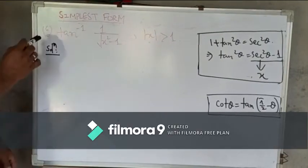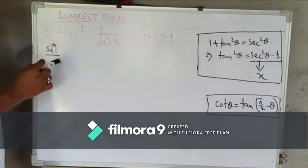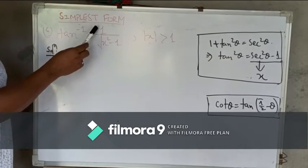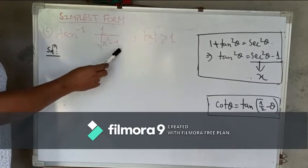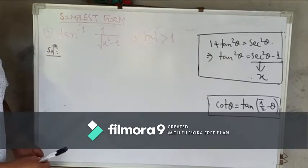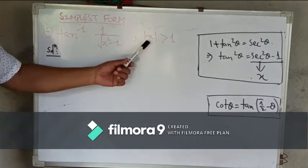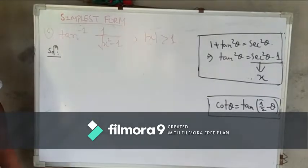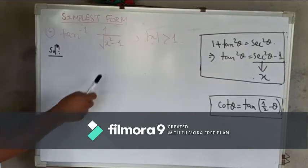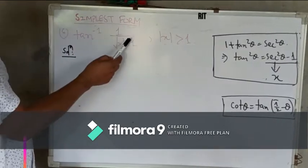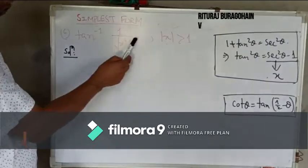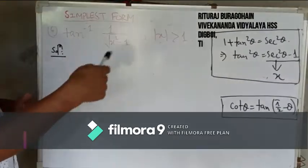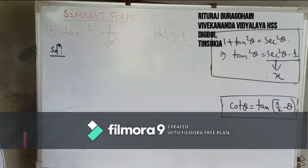Simplest form. I am taking question number 6, which is tan inverse of 1 by root of x squared minus 1, and the domain is mod x divided by 1. Now you have to see that x squared minus 1, how it can be transformed.